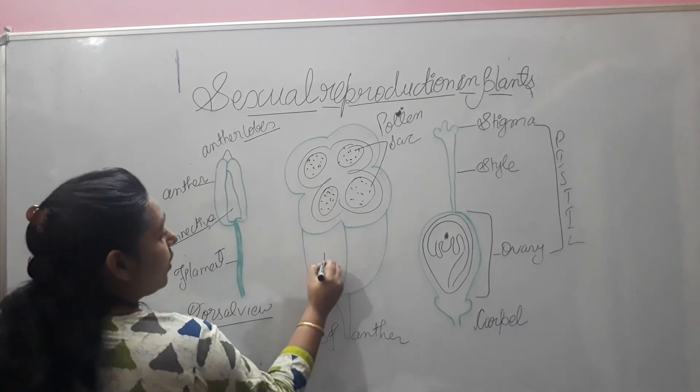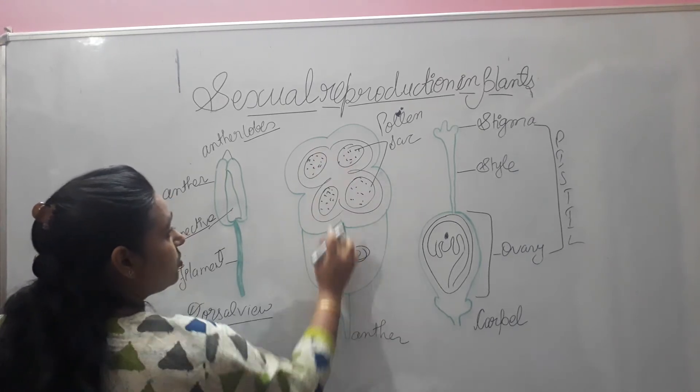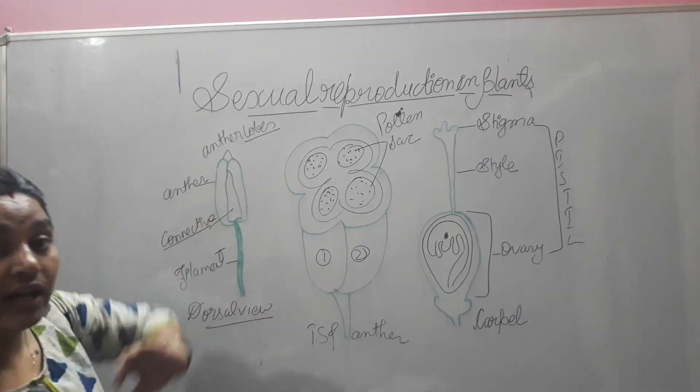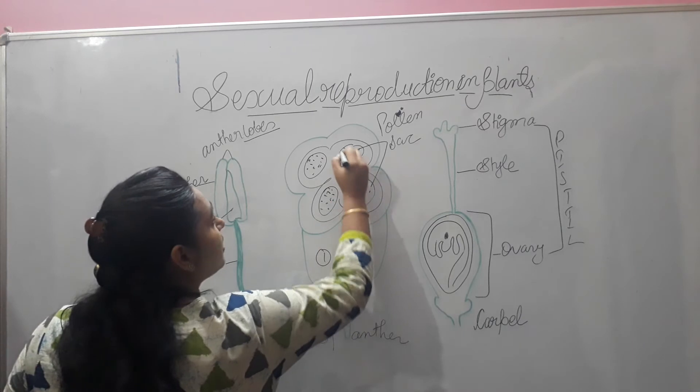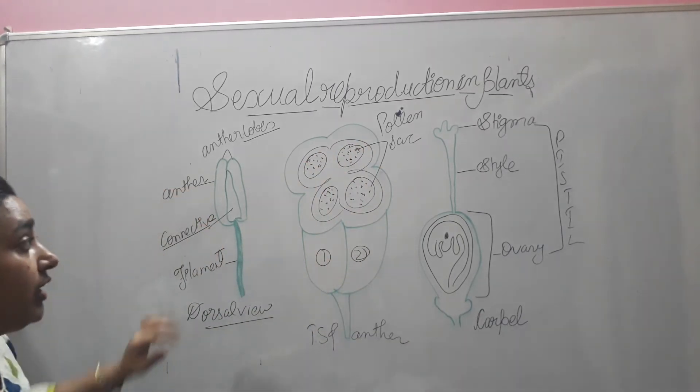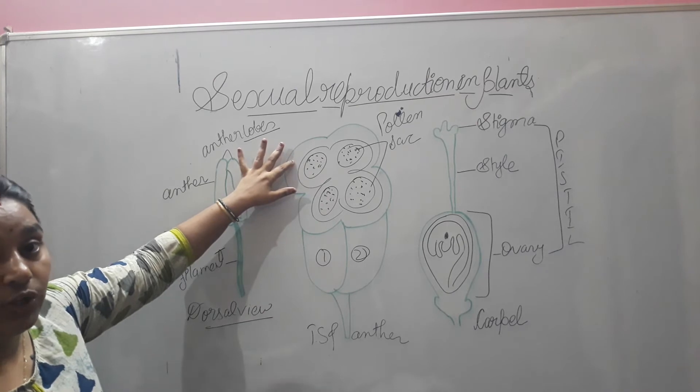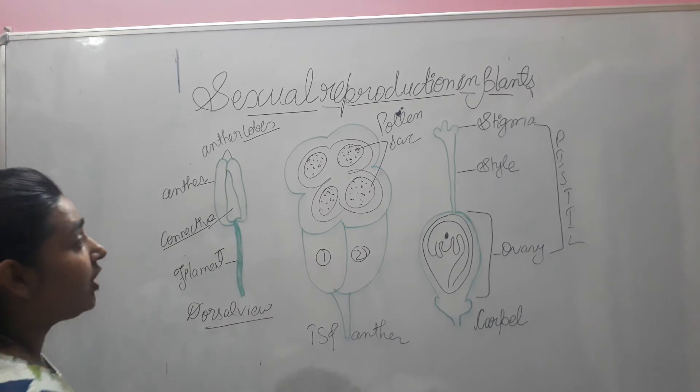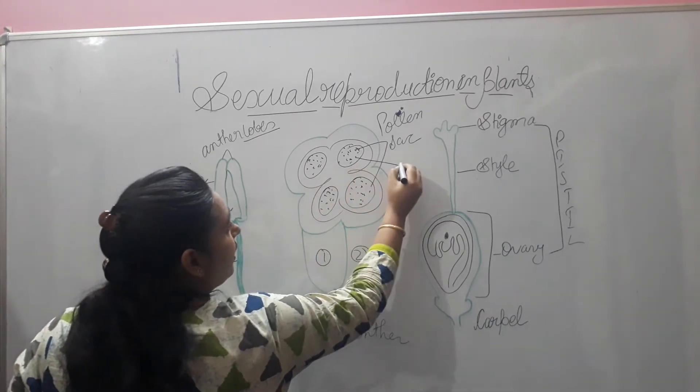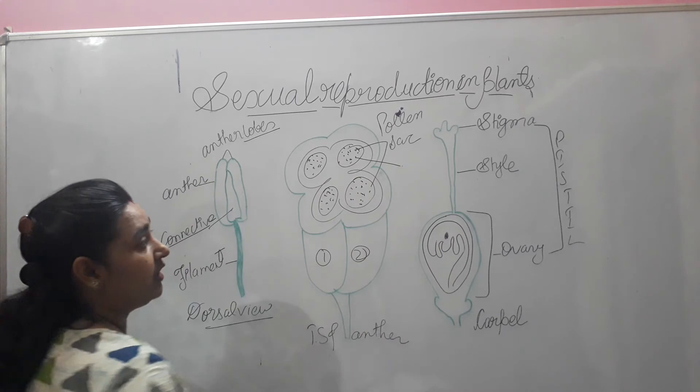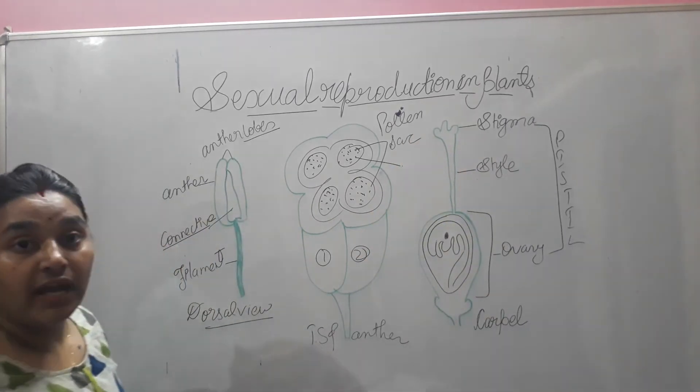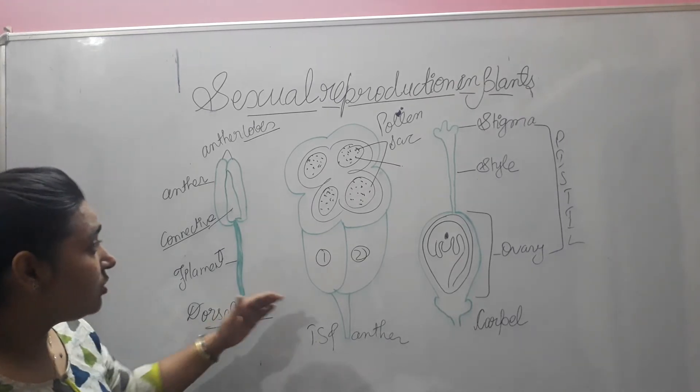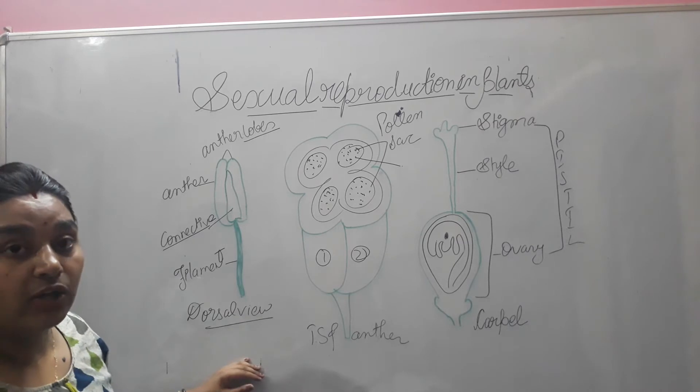This is one lobe and this is the second lobe. Each has two sacs. Inside these pollen sacs, there are a number of pollens present. Each pollen has the ability to fertilize. It depends on the quality of the pollen. When the pollen comes out and lands on the stigma, if the stigma accepts it, then it will be able to fertilize.